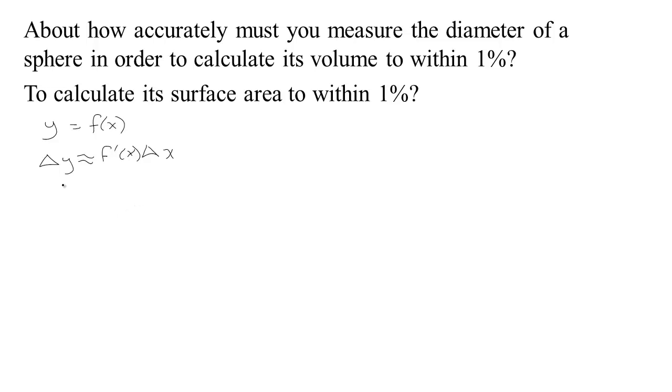Now one place where this happens a lot is if we're doing some kind of experiment. We take some measurement and then we try to calculate something else based on that experiment. We want to know in any measurement there's going to be some error in the initial number, so there's the possibility that what we got should be changed to be some other values. So there's going to be an error in the measurement.